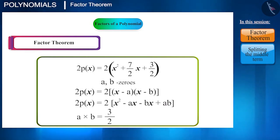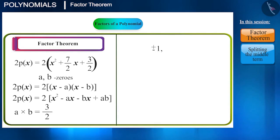So we will find two numbers a and b whose product is 3/2. First of all, plus or minus 1 and the number itself, that is plus or minus 3/2 are the factors. Also, 3/2 can be written as 3 multiplied by 1/2. That is, plus or minus 3 and plus or minus 1/2 will also be factors. Thus, some possible values of a and b can be plus or minus 1, plus or minus 1/2, plus or minus 3, plus or minus 3/2.